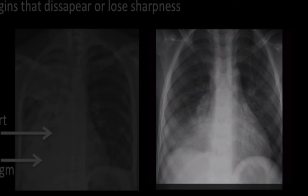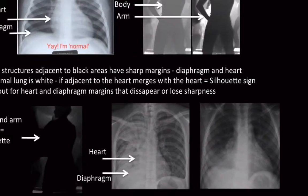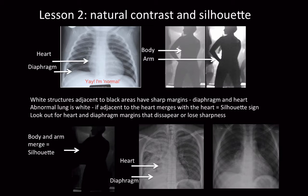So the lesson is this: if the cardiac margin is indistinct, irregular, or missing, that means there's adjacent disease in the lung — this is the silhouette sign. Always look at the cardiac margins and the diaphragms and be sure you can draw with a pencil the outline throughout their entire length.